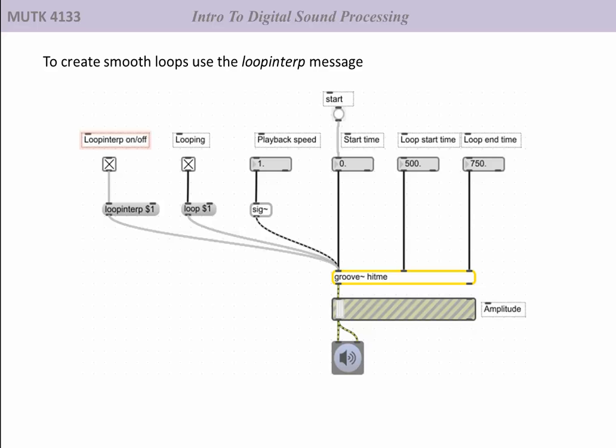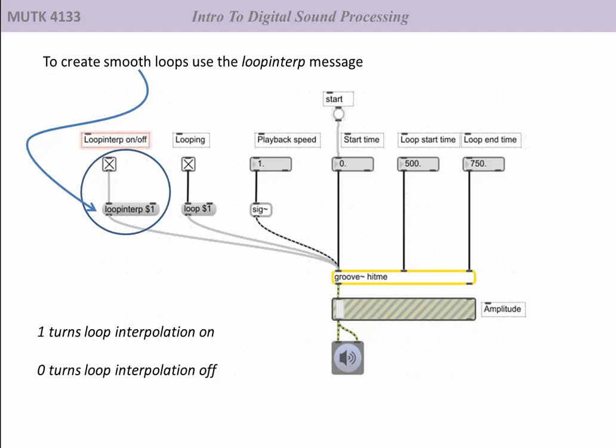To create smooth, undetectable loops with groove~, we use the loopinterp message. If we don't put that in, groove~ will go to the loop start time and play to the end time, and then go back to the beginning of the loop start. But that may not always be a smooth transition.